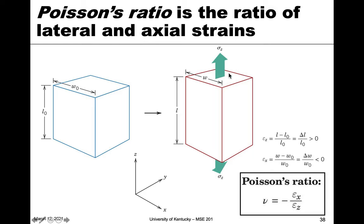And there's a negative to compensate for the fact that those directions are different. One of them is extending, and one of them is contracting, and so this is to get a positive ratio.